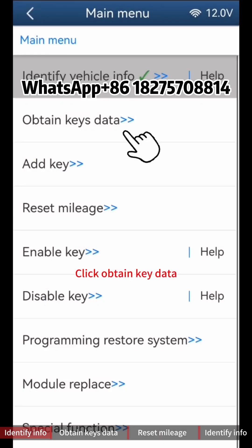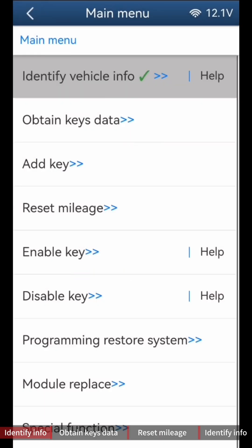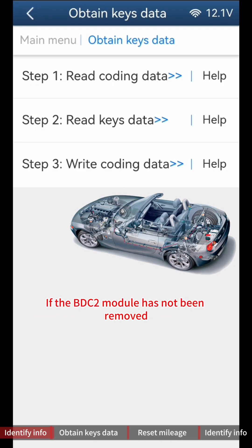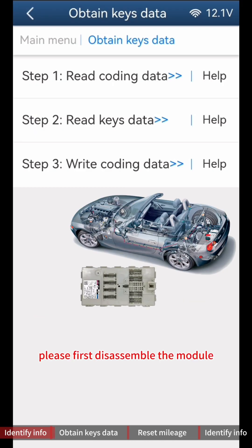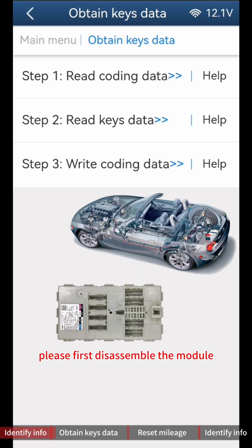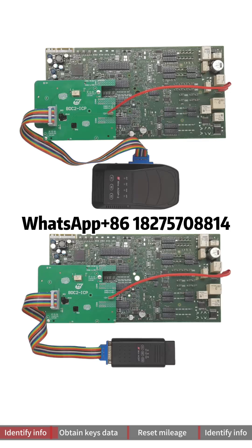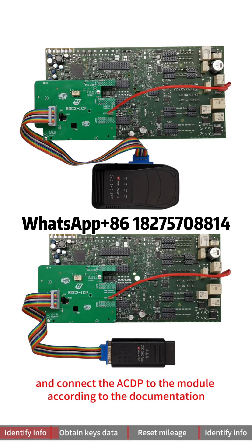Click Obtain Key Data. If the BDC2 Module has not been removed, please first disassemble the module, then click Help in Step 2. Connect the ACDP to the module according to the documentation.